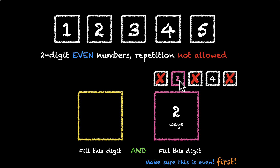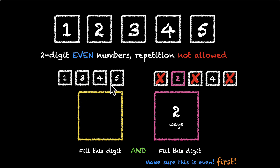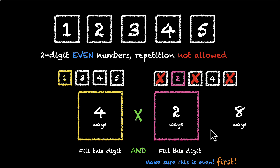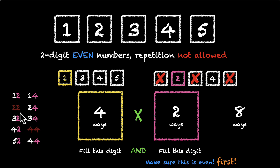This time for the yellow (tens digit) box we can't pick 2, so we have 1, 3, 4, and 5 — only four options. So four ways. Because you have to do both, we multiply: 4 times 2 gives us 8. So all in all we have 8 two-digit even numbers where repetition is not allowed. Note that 22 and 44 are not part of this list because those digits repeat — all the remaining numbers qualify.